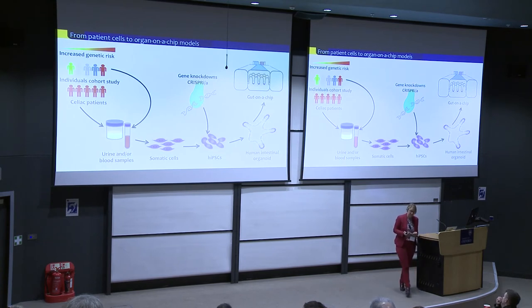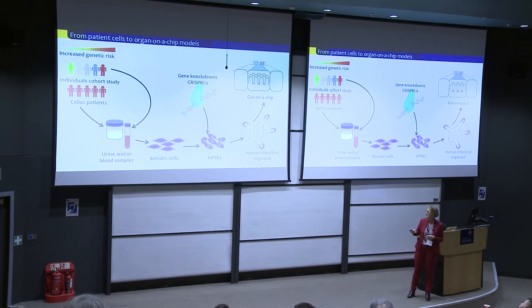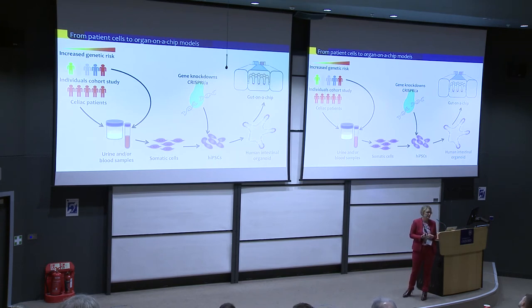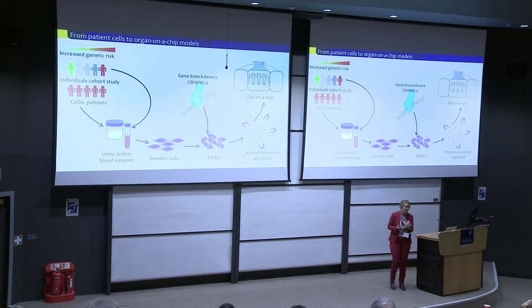In practice, we can start with either people from a cohort study — any genetic background you're interested in — or in our case, celiac patients. We collect either fresh urine or PBMCs, both fresh or frozen. Then we isolate somatic cells, reprogram them into induced pluripotent stem cells, make organoids — in our case intestinal organoids — and those are seeded on the chips to recreate the gut on the chip.